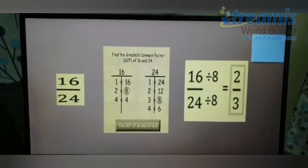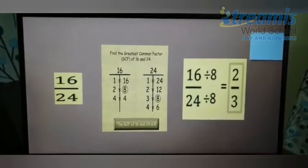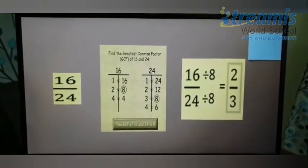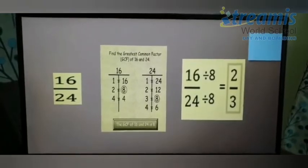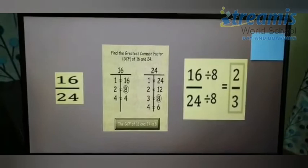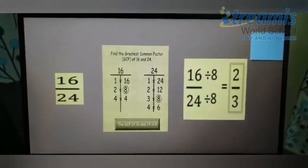Yes, 1 into 16 is equals to 16. Yes, so 1 and 16 are the factors for 16. 2 and 8 are the factors for 16. Now, 4 into 4 is equals to 16. Yes, 4 is also the factor for 16. So, here as you can see, children, the common factors are 1, 2, 4 and 8.